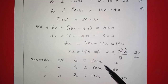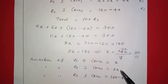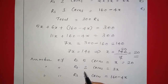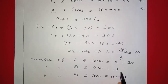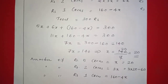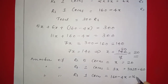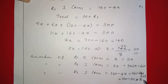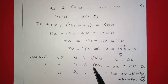The number of 5-rupee coins is x equals 20. The number of 2-rupee coins is 3x equals 3 times 20 equals 60. The number of 1-rupee coins is 160 minus 4x equals 160 minus 80 equals 80. So: 20 five-rupee coins, 60 two-rupee coins, and 80 one-rupee coins.